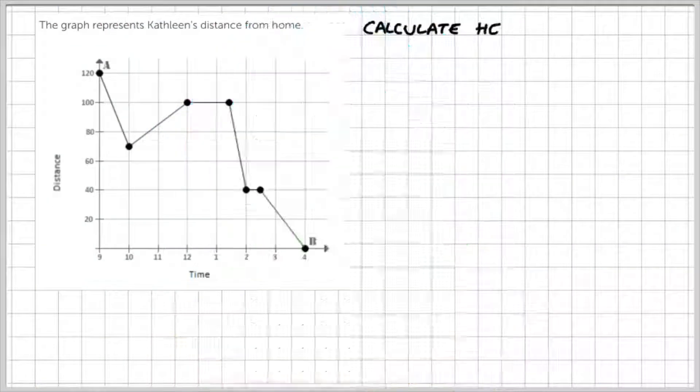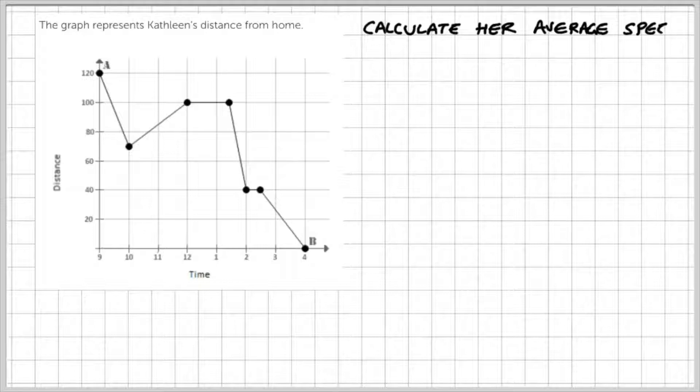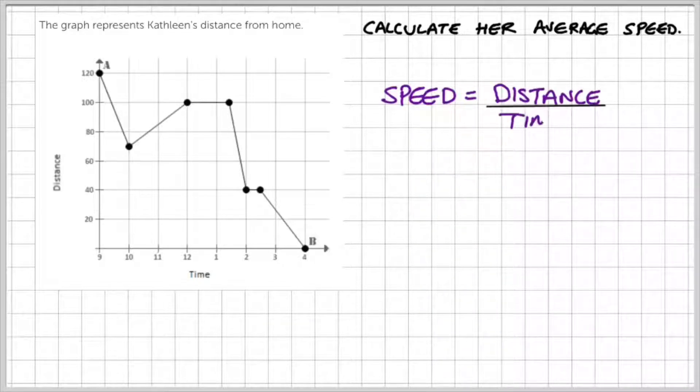So in the next example, we're going to continue to work on the average speed. It says the graph represents Kathleen's distance from home. Calculate her average speed. Now remember what we said. We said speed is equal to distance divided by time.